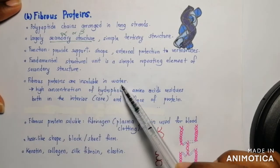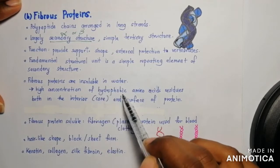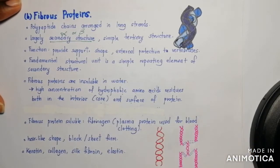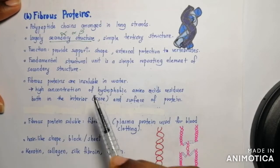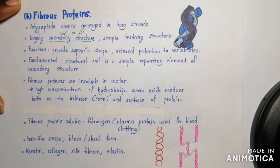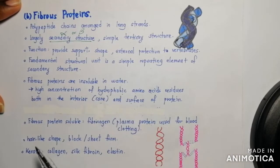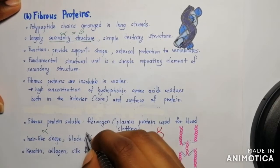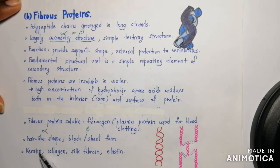Fibrous proteins are insoluble in water because they have a high concentration of hydrophobic amino acids — water-fearing amino acids — both in the interior core and at the surface of the protein. The only fibrous protein which is soluble is fibrinogen, which is the plasma protein used for blood clotting. Most fibrous proteins are either in a hair-like shape, which is alpha helix, or in block or sheet form, which is beta conformation. Examples of fibrous proteins include keratin, collagen, silk fibroin, fibrin, and elastin.